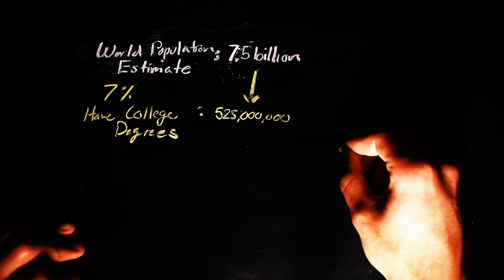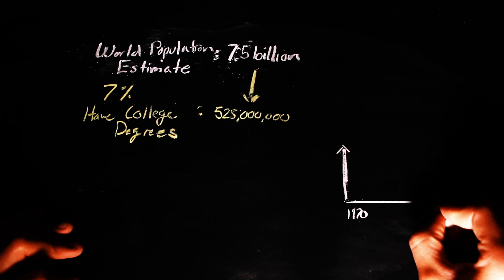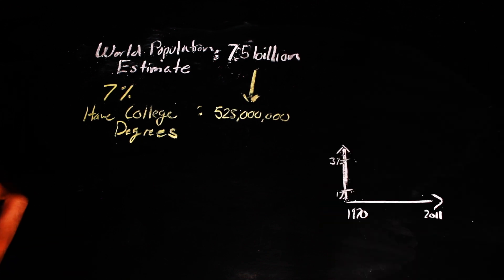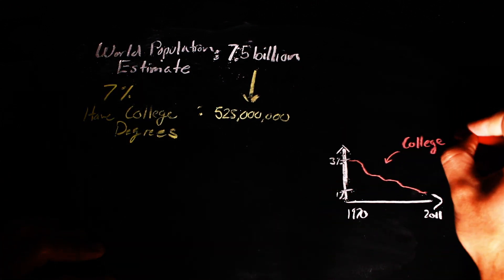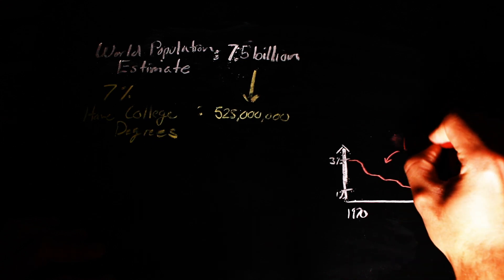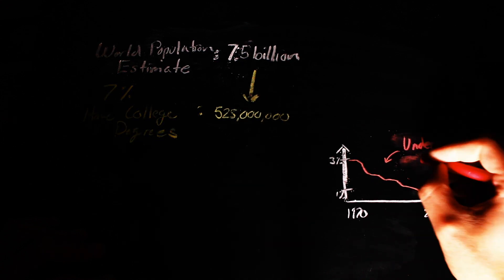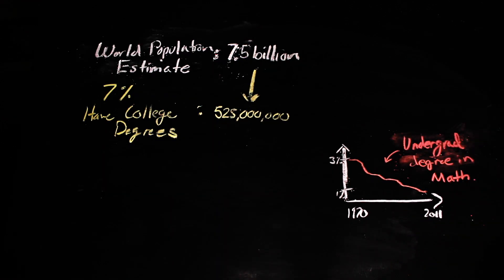According to the distribution of undergraduate degrees from 1970 to 2011, starting in 1970, only around 3% of college graduates received degrees in mathematics, and this number has slowly decreased to around 1% over the last 40 years.